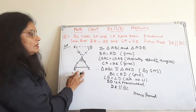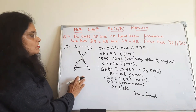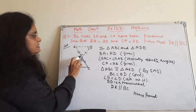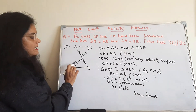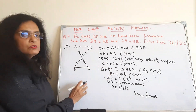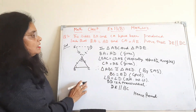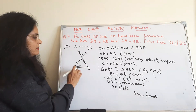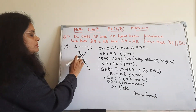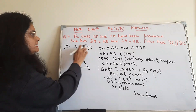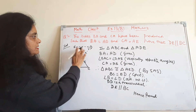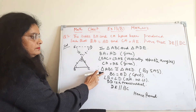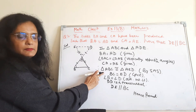Hence these two triangles are congruent by the Side-Angle-Side (SAS) congruence rule. As these two triangles are congruent, triangle ABC is congruent to triangle ADE. So BC is equal to ED by CPCT.